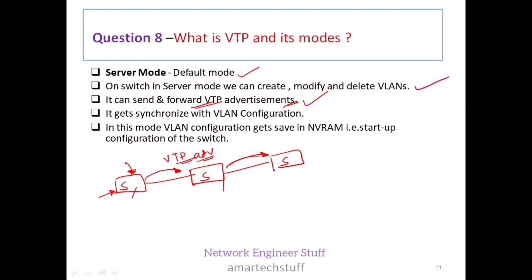For example, if a VTP advertisement says 'create VLAN 10,' both switches will create VLAN 10. In server mode, the VLAN configuration is saved in NVRAM — that is, in the startup configuration of the switch — because the switch has the capability to create, modify, and delete VLANs.